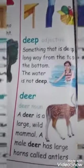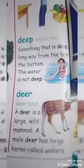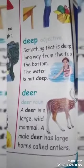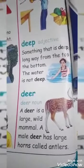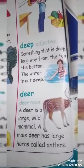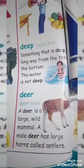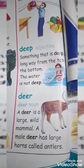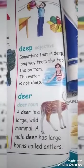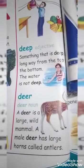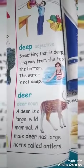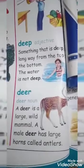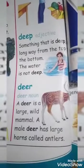Our next word is 'deer.' D-E-E-R. A deer is a large, wild mammal. Deer is a very large and wild mammal. A male deer has large horns called antlers.